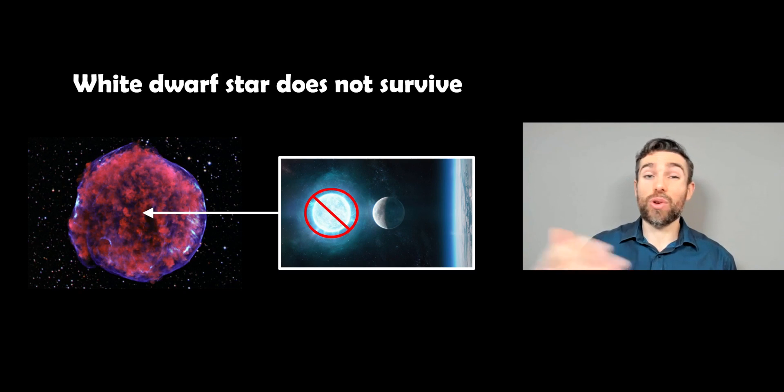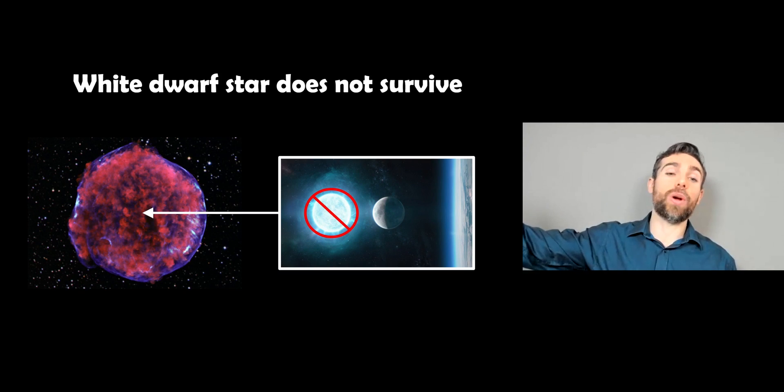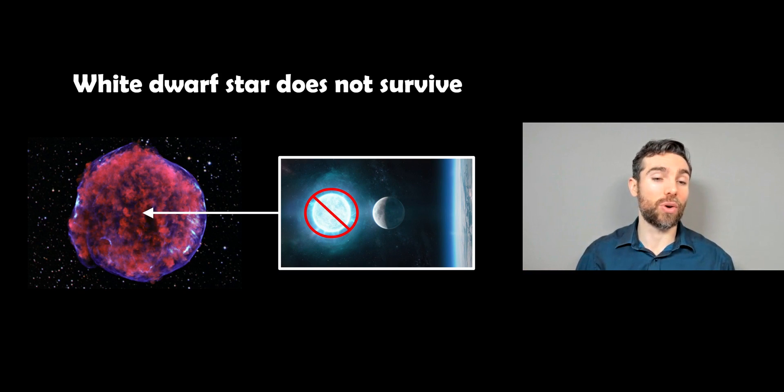What will happen is it likely will lose some of its outer layers from the supernova and it will receive a velocity kick, so it's essentially thrown with some velocity away from the explosion. So it does survive but the white dwarf does not.